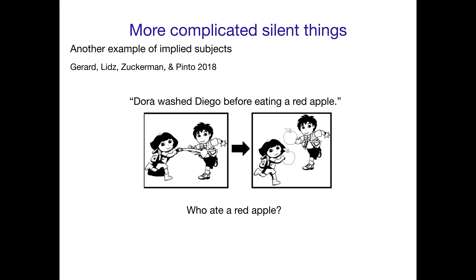You have two potential implied subjects: Dora, who's this girl right here, and Diego. So 'Dora washed Diego before eating a red apple' — you have the washing event, and then the question is: who ate the red apple? Who is the implied subject of 'eating a red apple'?